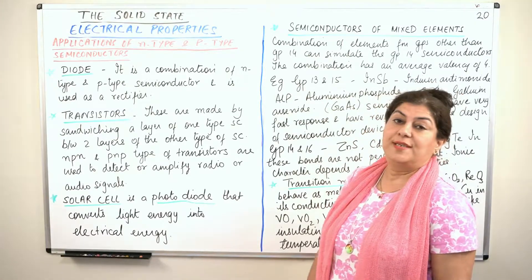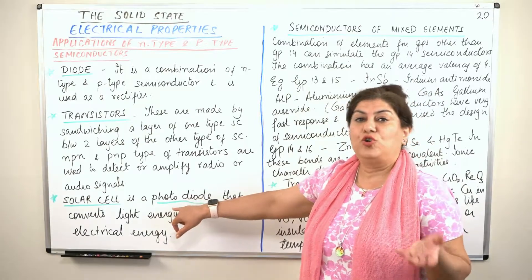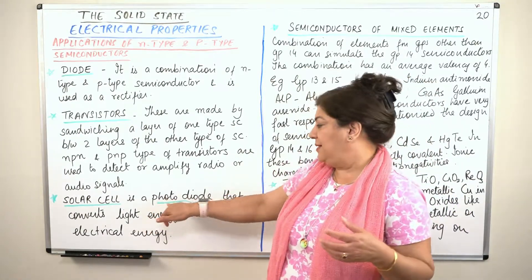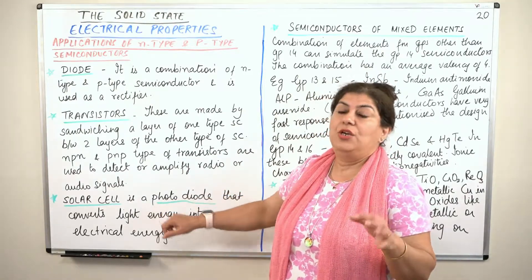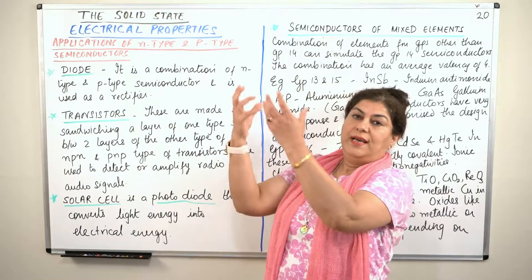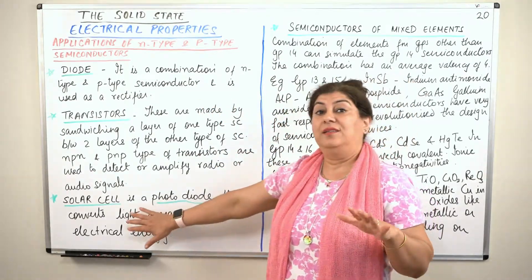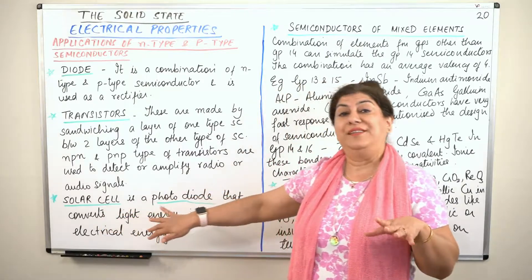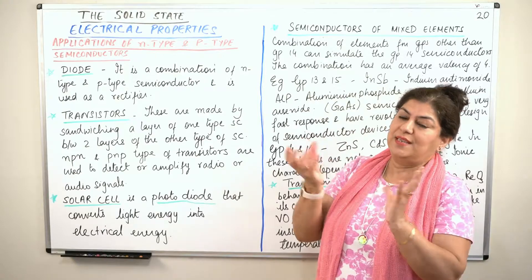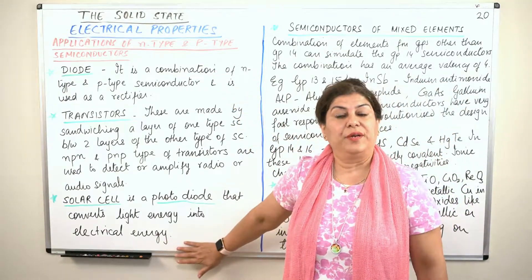The next application is in solar cells. Solar cells are nothing but a photo diode — photo meaning activated by light. A solar cell is used to convert light energy into electrical energy. It is a diode, a photo diode, that is sensitive to light and can convert light energy into electrical energy.